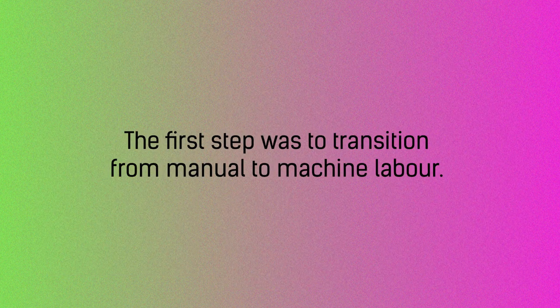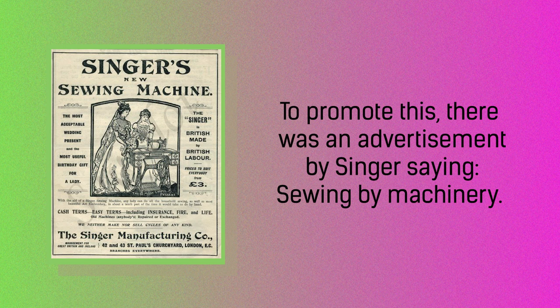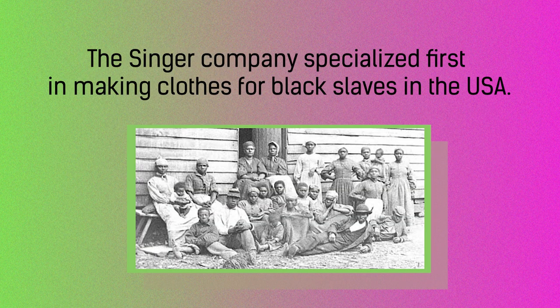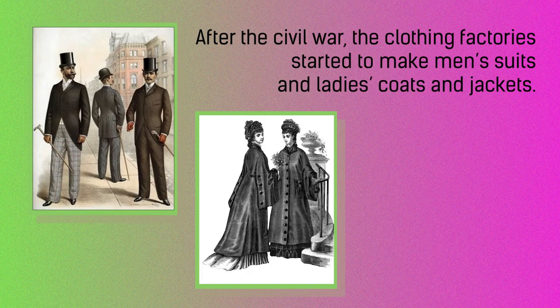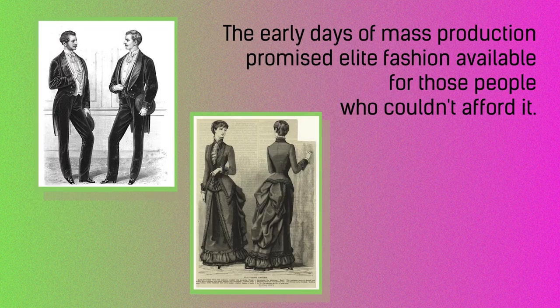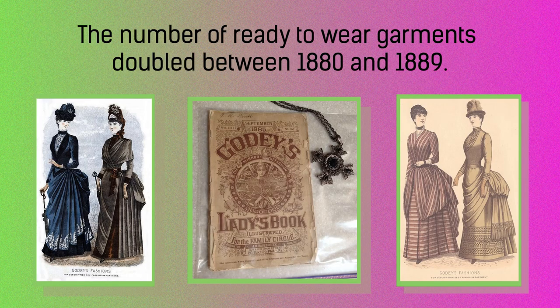The first step was to transition from manual to machine labor. To promote this, there was an advertisement by Singer saying 'sewing by machinery.' The Singer company specialized first in making clothes for Black slaves in the USA. After the civil war, the clothing factory started to make men's suits and ladies' coats and jackets. The early days of mass production promised elite fashion available for those people who couldn't afford it. The number of ready-to-wear garments doubled between 1880 and 1889.